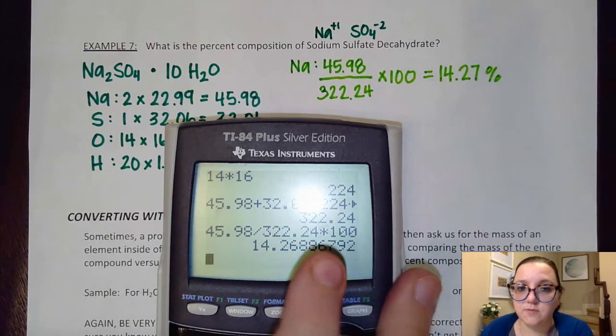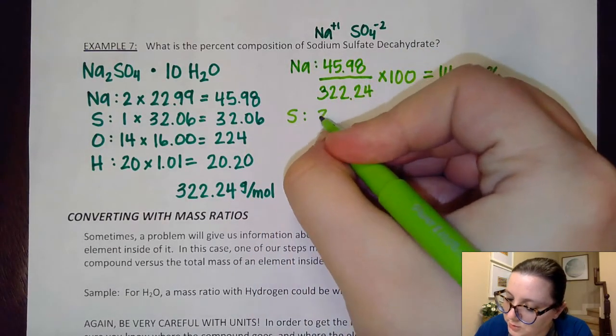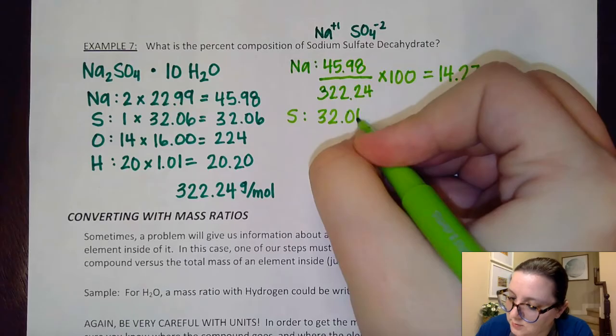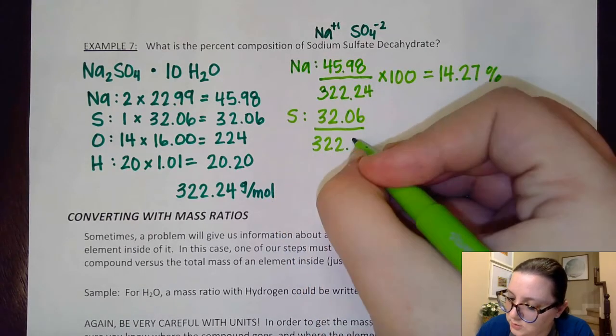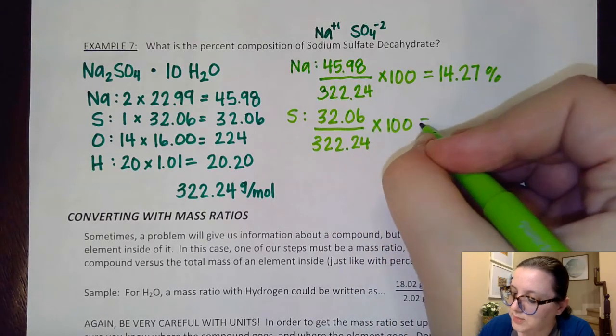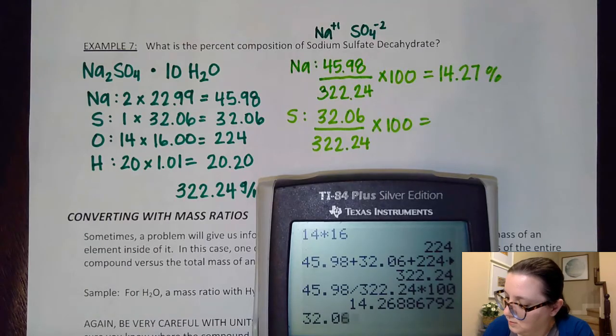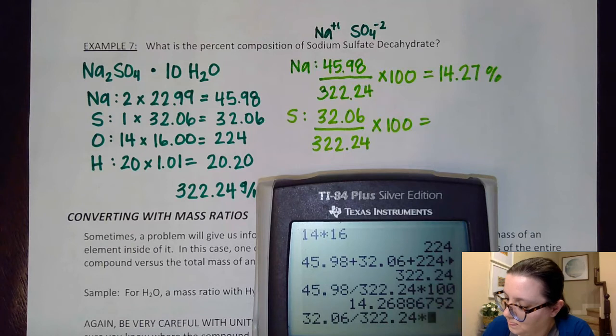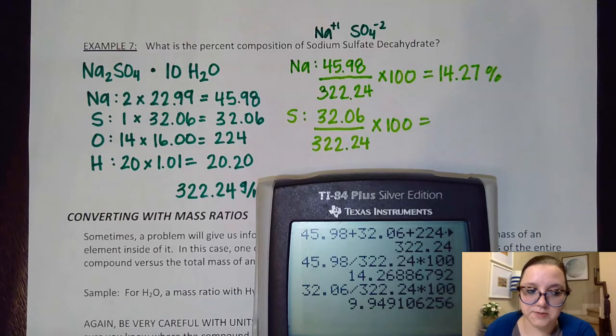And I'm going to do the same thing for now for my other elements. So for sulfur, 32.06 over 322.24 times 100 to get our fraction into a percent. All right. And that gets us right around 9.95%.